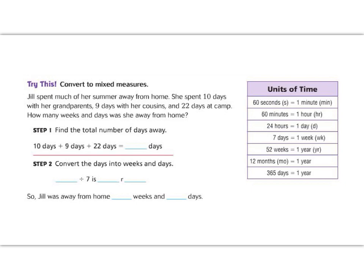Jill spent much of her summer away from home. She spent 10 days with her grandparents, 9 days with her cousins, and 22 days at camp. And now we're going to convert how many weeks and, if we have leftover, days was she away from home. So step one says let's figure out how many days that was total. So she had 10 plus 9 plus 22. So that means that she was gone. 9 plus 2 is 11, and 2 plus 2 is 4. So she was away from home for 41 days.